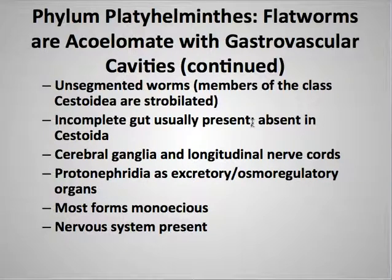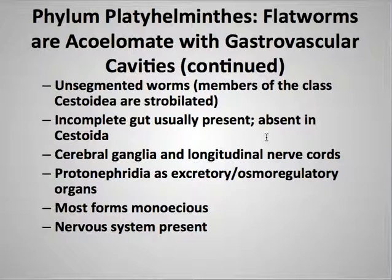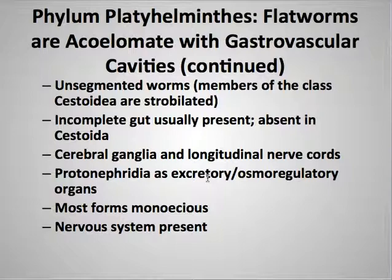These are unsegmented worms — that's an important distinction because it differentiates phyla more than anything. When we get to the annelids, you'll see that they actually have segmentation, which was a huge advancement. You will see something called strobilation with the cestodes — that's a different type of segmentation. Although they do have a gut, it is incomplete when present, and it is completely lacking in the cestodes. They do have ganglia and longitudinal nerve cords, and they have protonephridia, which are very fine networks of tubules that originate from flame cells — cells dispersed at the surface. Most of them are monoecious and a nervous system is present.